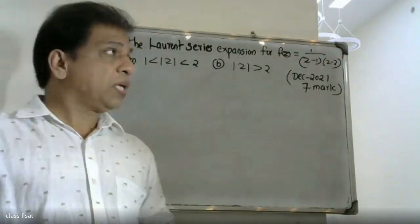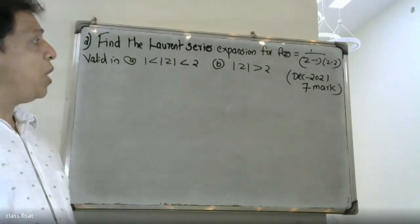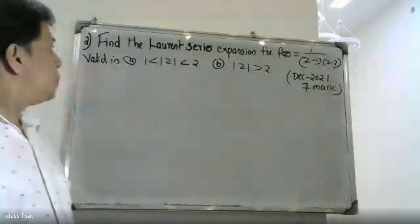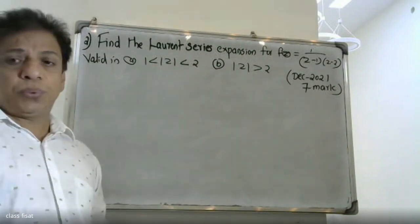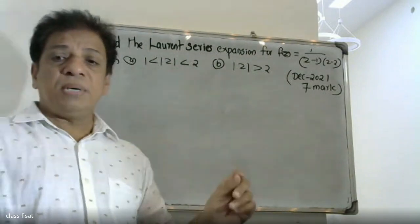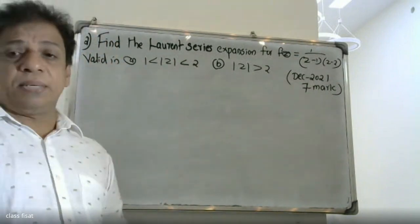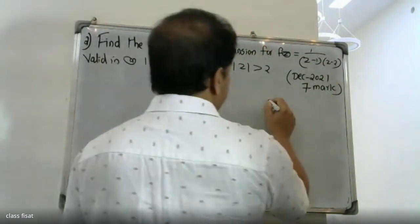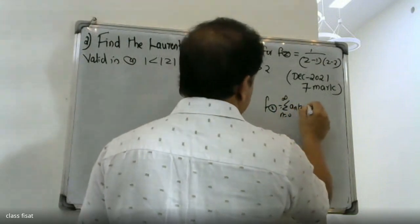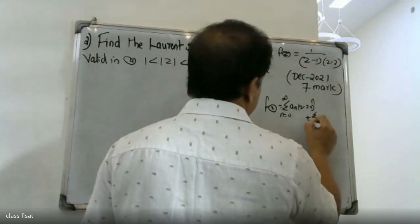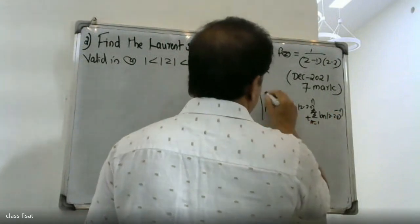Good morning students. The question is to find the Laurent series expansion for f(z) equal to 1 divided by (z minus 1)(z minus 2), in the regions: first, 1 less than |z| less than 2, and second, |z| greater than 2. The Laurent series is equal to sigma n equal to zero to infinity a_n times (z minus z-naught) to the n, plus sigma n equal to one to infinity b_n times (z minus z-naught) to the minus n.